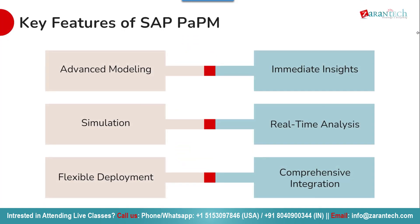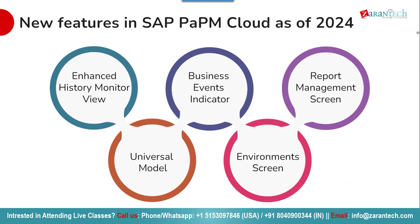One of the most important key features is its ability to deliver immediate insights to decision makers, enabling real-time analysis of profitability drivers. SAP PAPM also offers comprehensive integration with the company's existing IT systems and data sources. Its advanced modeling capabilities allow multi-dimensional analysis and the creation of dynamic cause-and-effect models. The simulation functionality is a powerful tool for assessing the impact of business decisions before implementing them. SAP PAPM provides flexible deployment options, either on-premise or in the cloud. For the cloud version as of 2024, the history monitor view allows you to visualize changes made to your data and models over time, helping identify any discrepancies.